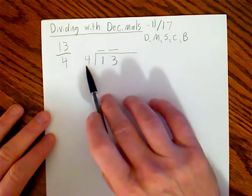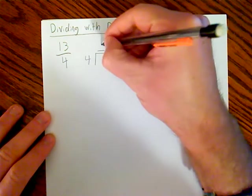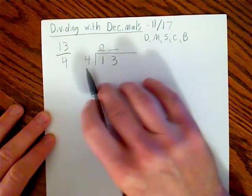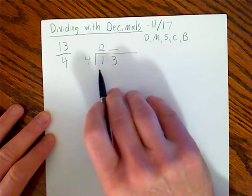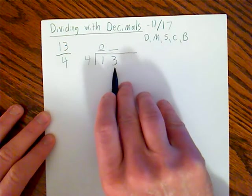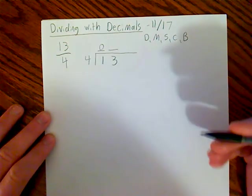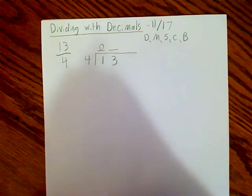Here we go, jumping in. 4 divided by 1, that cannot happen, so I'm going to write a 0. You can't divide 4 into 1 evenly, so when that happens I move on to the double digit number. 4 divided by 13.